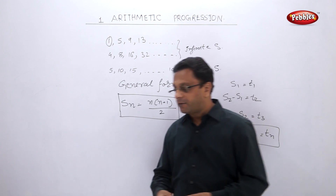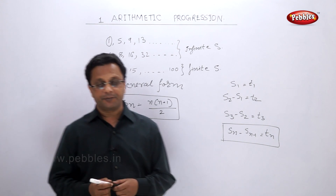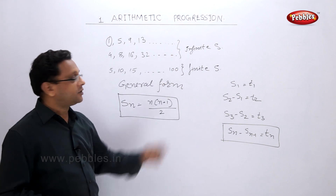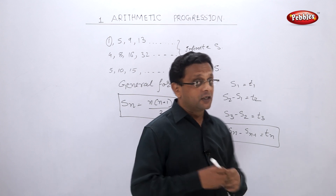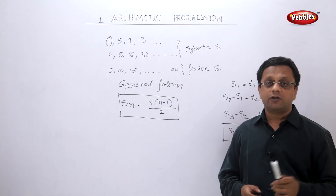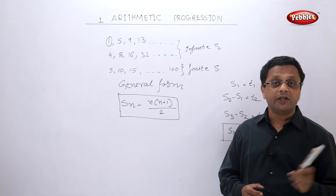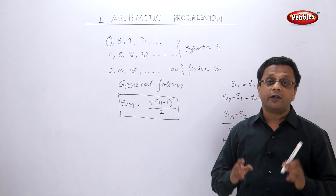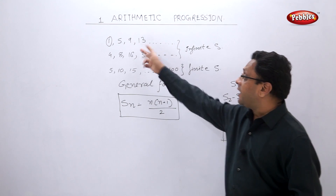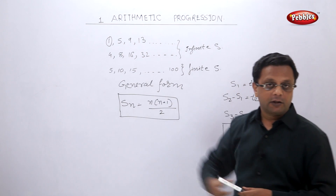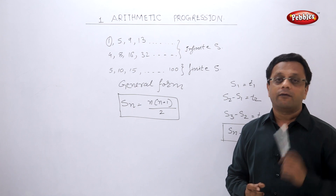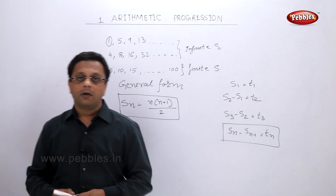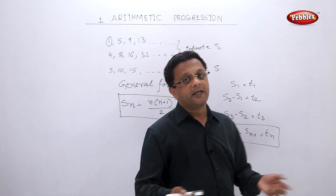Now, what is the difference between a sequence and a set? In a sequence, numbers are arranged in a definite order with a definite rule — you cannot interchange the terms. But in a set, you can rearrange the terms. Also, in a sequence, numbers can be repeated.